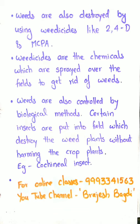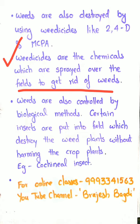Weeds are also destroyed by using weedicides, like 2,4-D and MCPA. This is a modern method. Weedicides are chemicals which are sprayed over the field to get rid of weeds. When these chemicals are sprayed across the fields, they destroy the weeds. Examples of commonly used weedicides are 2,4-D and MCPA. MCPA stands for 2-methyl-4-chloro-phenoxy-acetic acid — you will study this in detail in higher classes, as it is beyond our current syllabus.